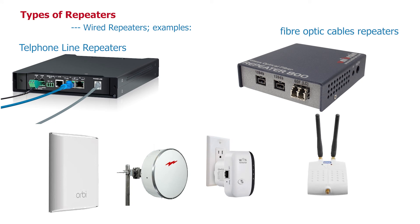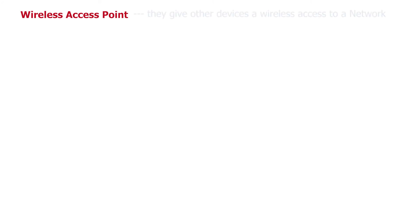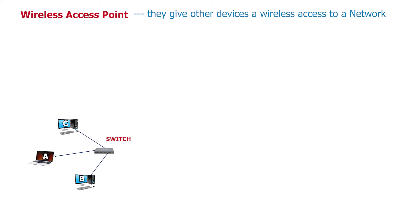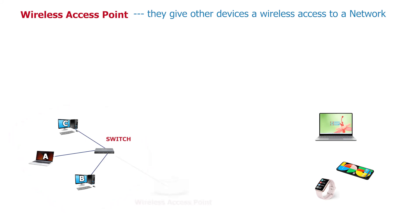Another network device we will talk about today is the wireless access point. As the name implies, a wireless access point gives other devices wireless access to a network. In this example, if we have wireless devices such as phones, laptops, and even smartwatches that need to connect to a network, we can connect an access point by cable to the LAN and the access point will give these devices wireless access.